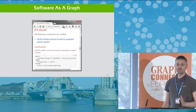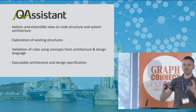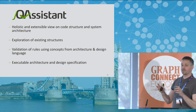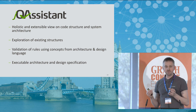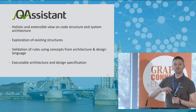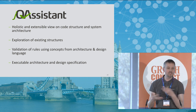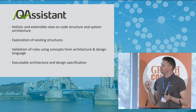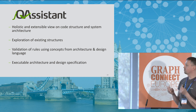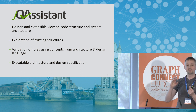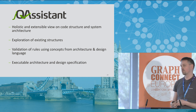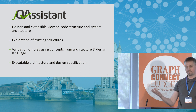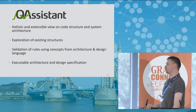So, this was the lightning talk — a short wrap-up. What you get by scanning software structures into a graph database is a very holistic and extensible view on code structure and system architecture. You can explore existing structures just by doing queries, gather metrics, and validate your application on the fly using abstract concepts which you can define yourself from the design and architecture language.